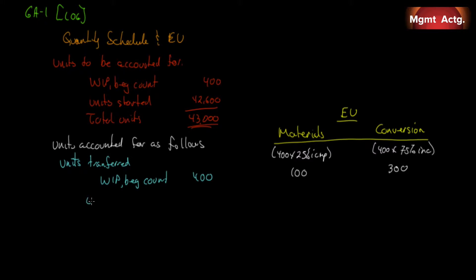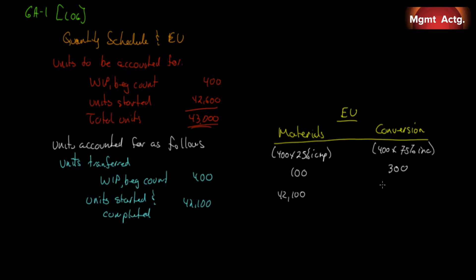Next we move on to units started and completed. Whatever is transferred has to be complete first, so the 400 on the line go first, and then whatever's left over. We're told that units completed and transferred out were 42,500. The first 400 of those go from beginning WIP, so that means 42,100 were started and completed. In terms of equivalent units, they're all complete — 100% — so that's 42,100.